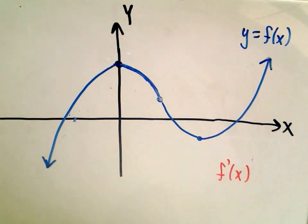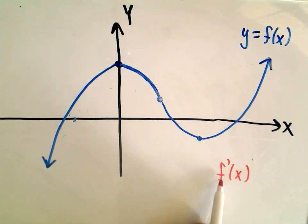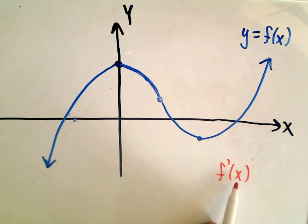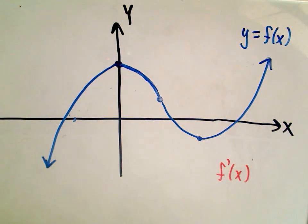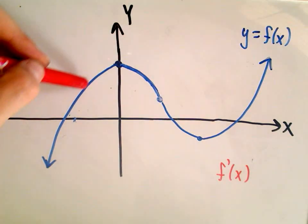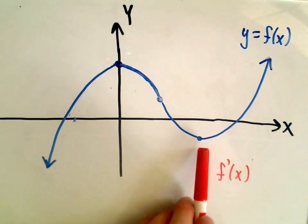Usually, what I do is — the first thing to remember is, you can interpret the value of the derivative at any particular x-coordinate as the slope of the tangent lines on the original. And usually I'll look for where my graph kind of peaks out, and then where it also bottoms out.